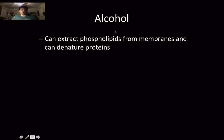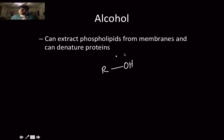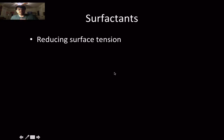There is also alcohol. The general structure of an alcohol is an OH group attached to any type of hydrocarbon structure. Alcohol can extract phospholipids from cell membranes and can denature proteins. Contrary to what some people may say, alcohol really is not that good for you.